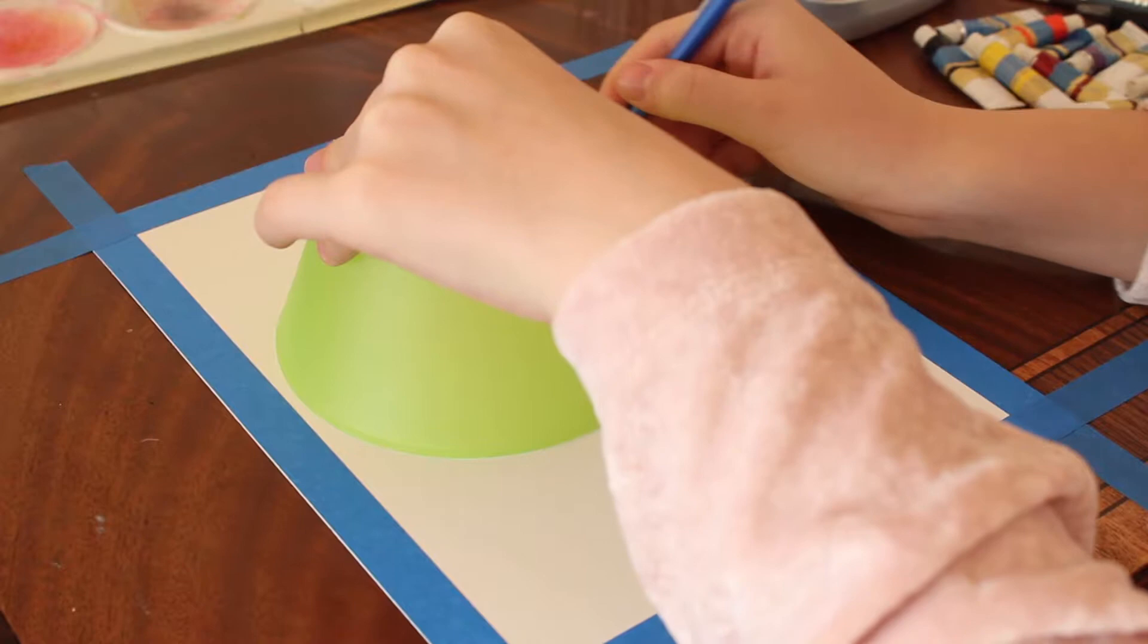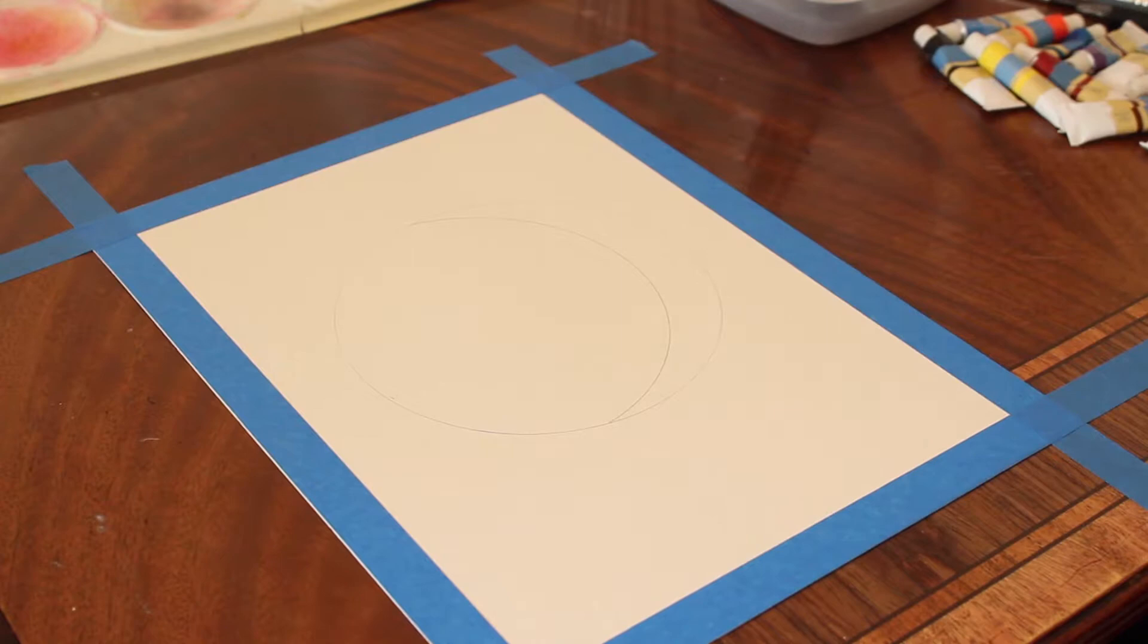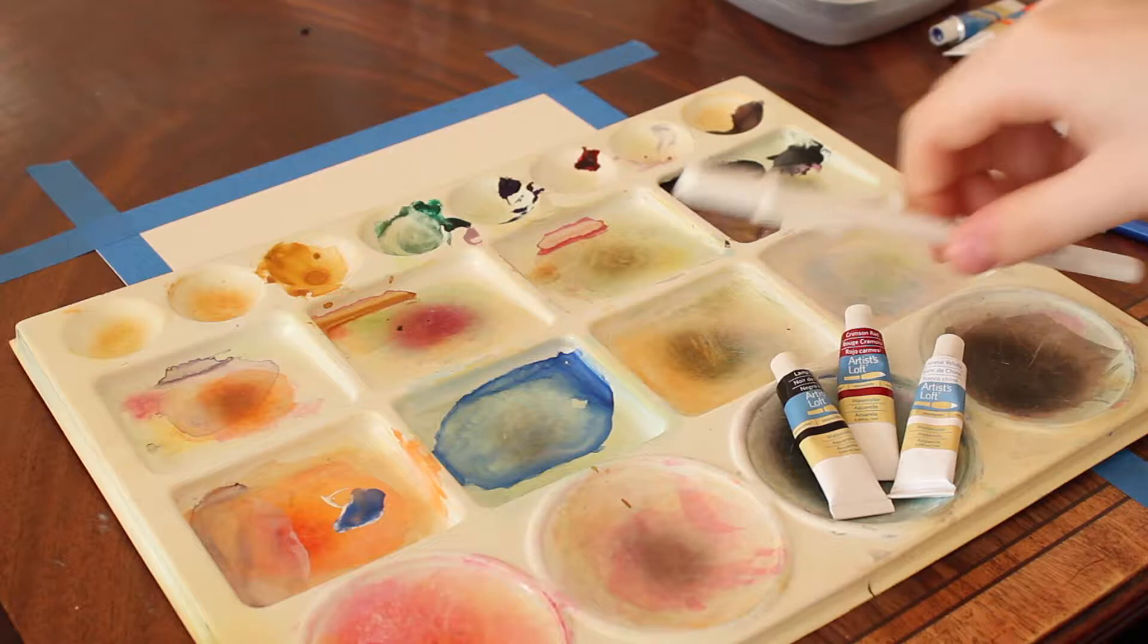Now you're going to need crimson red, black, and white watercolors, also a gel pen for later which I forgot to put in the beginning.